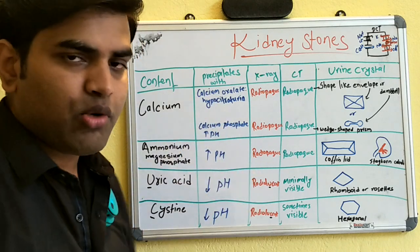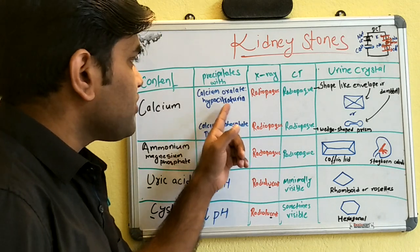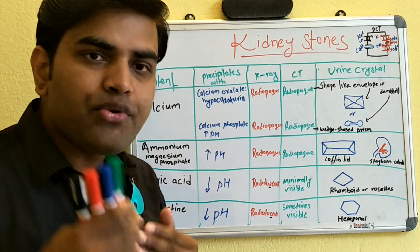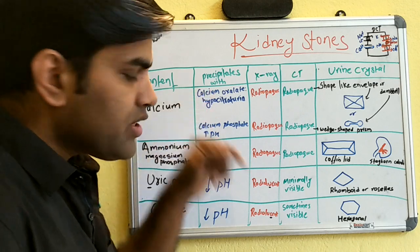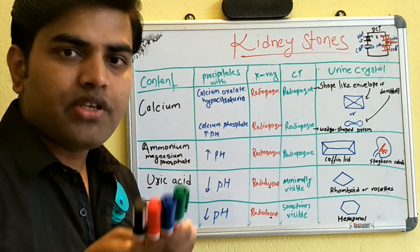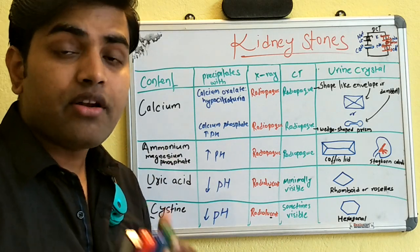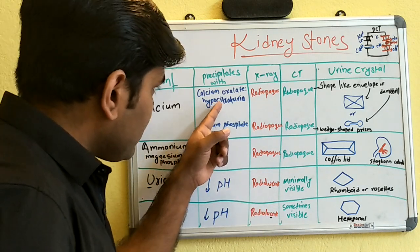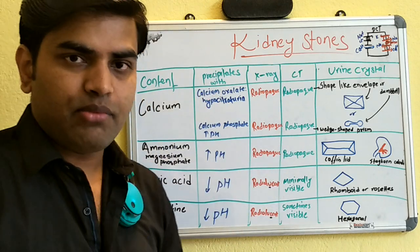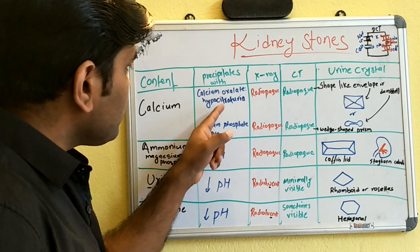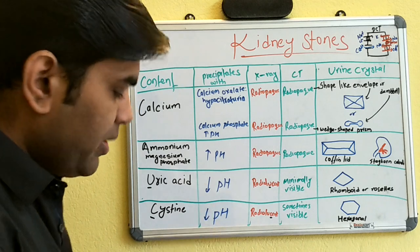Calcium is usually chelated by citrate. If, for any reason, citrate is less in the urine, then calcium doesn't get chelated, gets precipitated and deposited, and forms a renal stone. So citrate is necessary in the urine to prevent calcium stone formation.